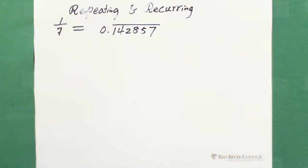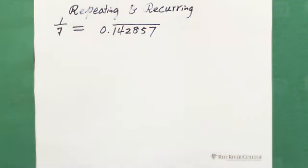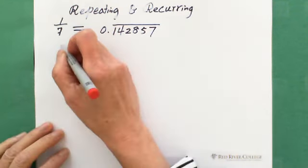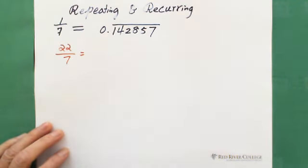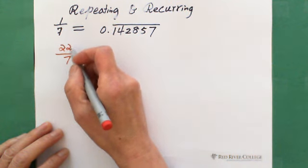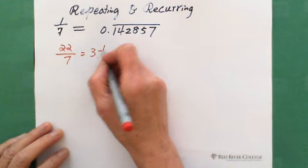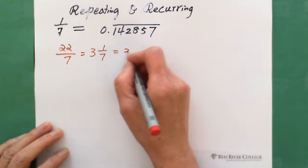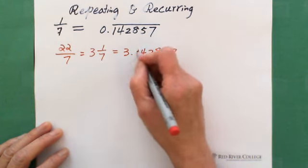Let's practice. If you have 22 over 7, this is an improper fraction. Change it to a mixed number: 3 times 7 is 21, so you get 3 remainder 1, which gives 3 and 1 over 7. Knowing this pattern, the answer is 3.142857, repeating.